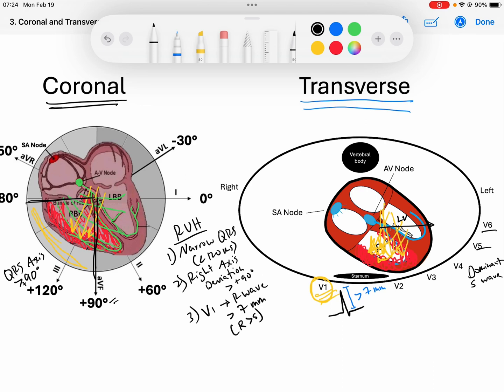Remember that ECG isn't the best for ventricular hypertrophy - an echocardiogram would be the best. I want you to focus on the most well-used criteria: in V1, those R waves that are greater than 7 millimeters or an R wave that is greater than the S wave.